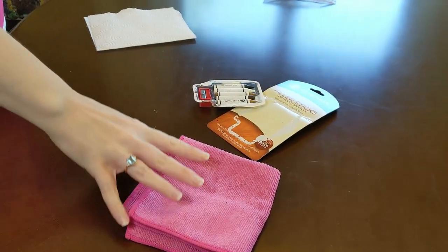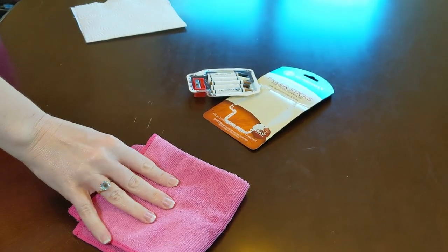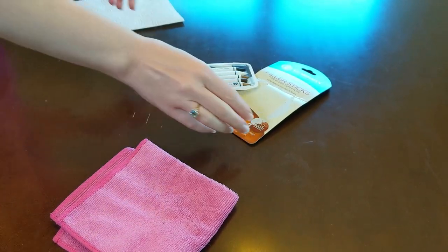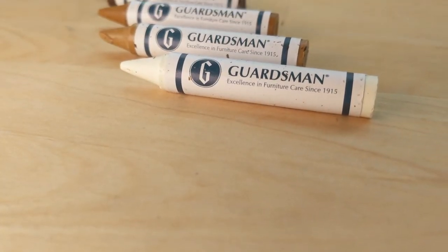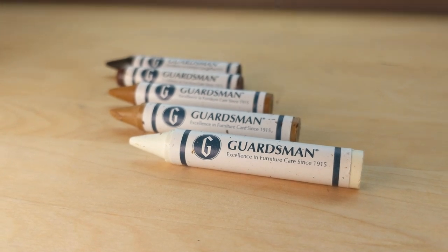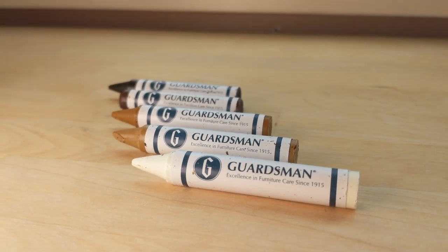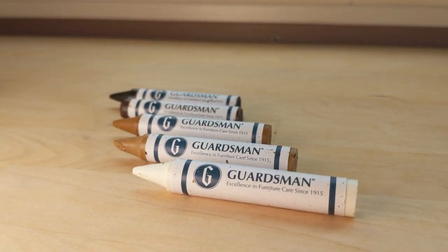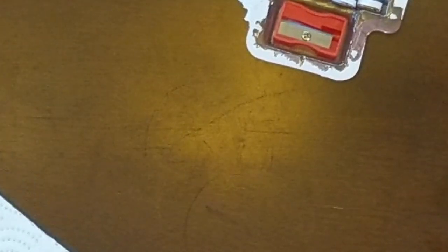To get started you'll need a few things. You'll need a microfiber cloth that's damp or a rag. You'll need some wood filler, and I love this Guardsman wood filler sticks. It comes with five in different colors and it matches just about any furniture that you need to fill. That's the most important thing. And then just a paper towel to wipe it off after you're done.